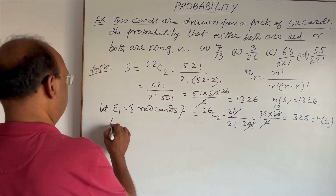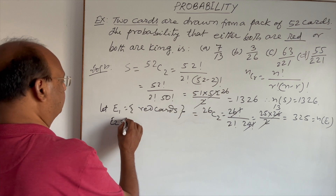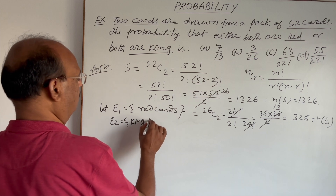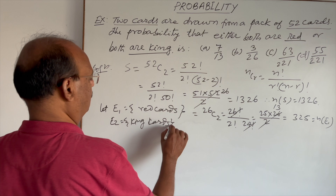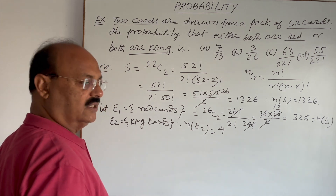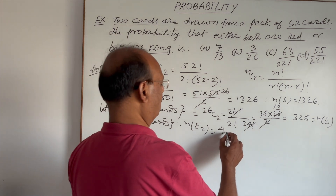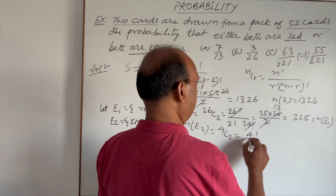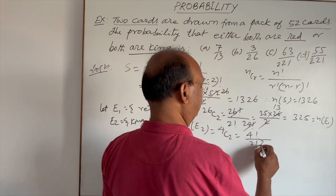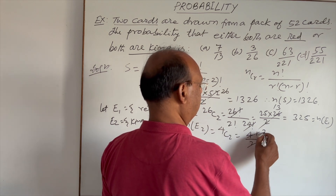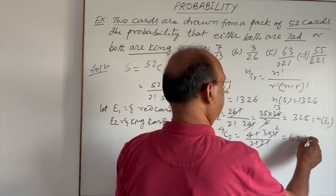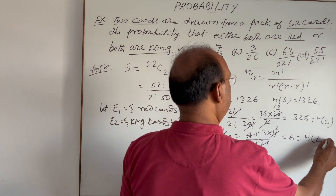Similarly, let E2 be the event of drawing king cards. n(E2): there are 4 king cards and we draw 2, so 4C2. This is 4 factorial by 2 factorial into 2 factorial, which simplifies to 3 × 4 divided by 2 = 6. So the number of elements in event E2 is 6.